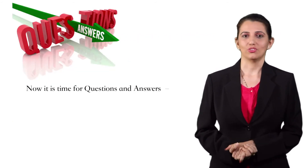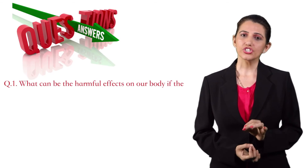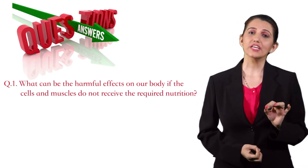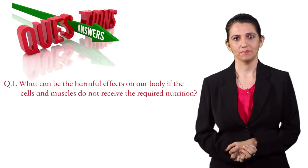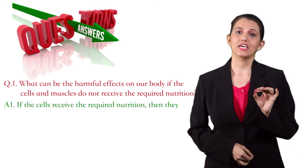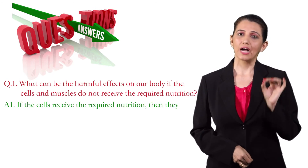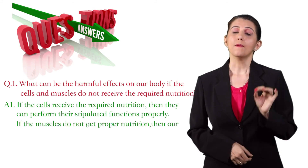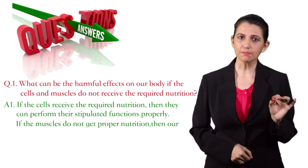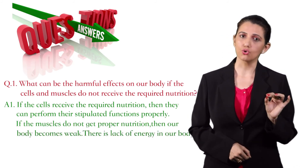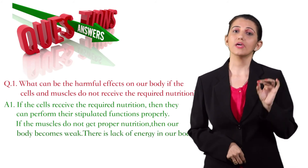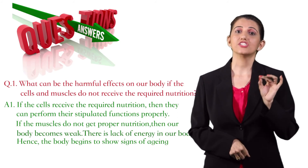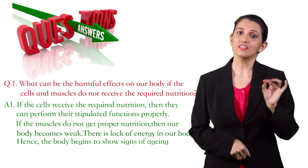Now, it is the time for questions and answers. Question: What can be the harmful effects on our body if the cells and muscles do not receive the required nutrition? Answer: If the cells do not receive the required nutrition, then they cannot perform their stipulated functions properly. If the muscles do not get proper nutrition, then our body becomes weak, there is lack of energy in our body. Hence, the body begins to show signs of aging before time.